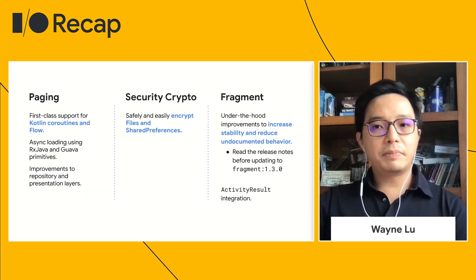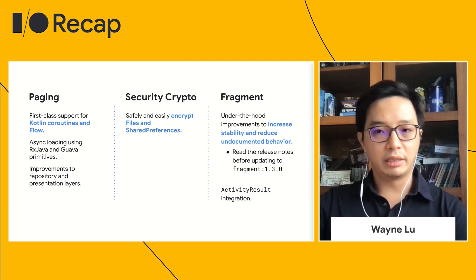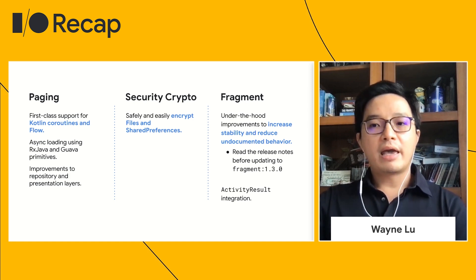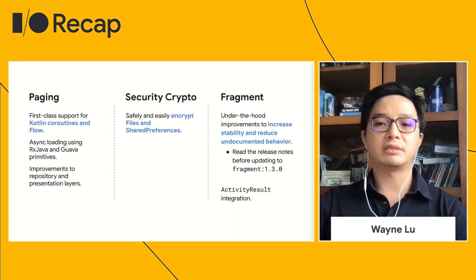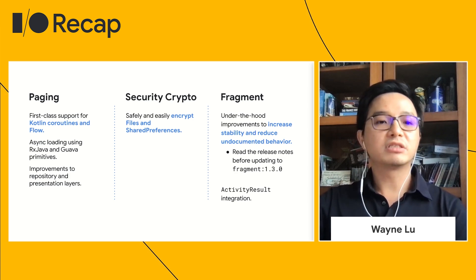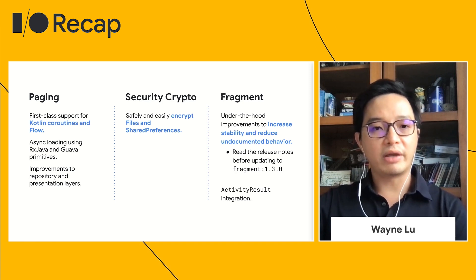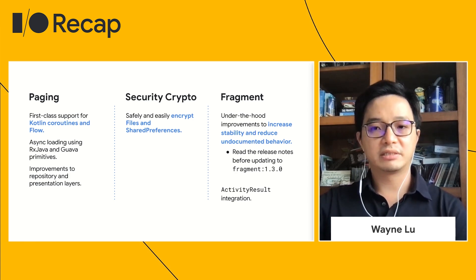For the Paging API, this features a complete rewrite in Kotlin, supporting coroutines and Flow, asynchronous loading with RxJava and Guava primitives, and overall improvements to the repository and presentation layers. You also have the Security Crypto library, which provides an easy way for you to encrypt files and preferences.